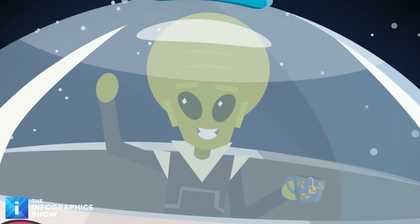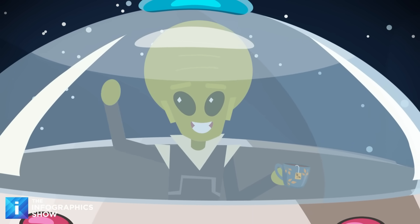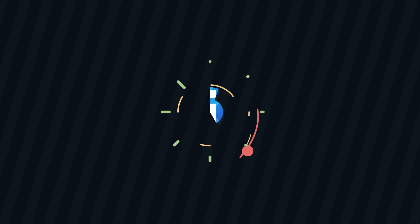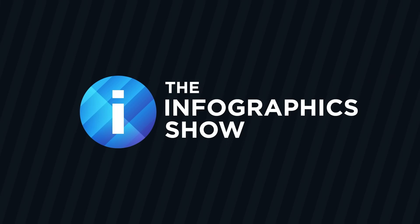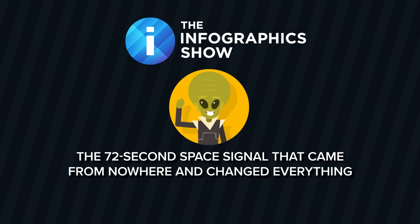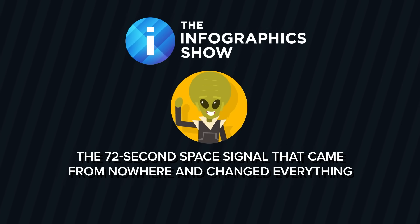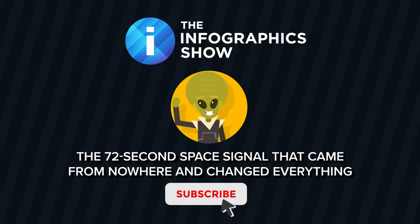Was it a message from extraterrestrials, a bizarre cosmic fluke, or something we still don't understand nearly 50 years later? We are heading deep into space to uncover the truth on today's episode of the Infographics Show, the 72-second space signal that came from nowhere and changed everything. Don't forget to hit that subscribe button!